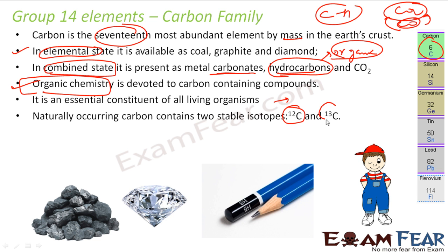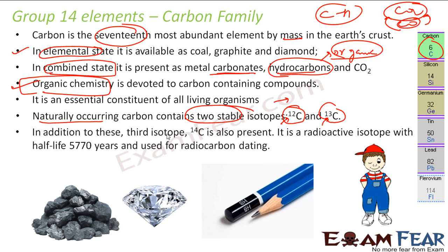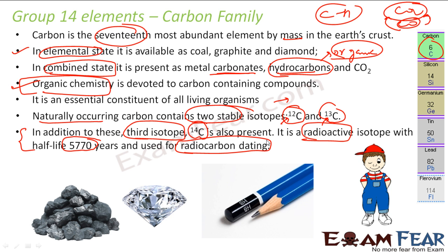There are two naturally occurring isotopes of carbon: C12 and C13, both of which are stable. There is a third isotope, C14, which is very rare and unstable — it is radioactive. C14 is used for radioactive carbon dating, which helps find the age of a particular object, such as a monument found in the earth or a tree whose age we want to determine.